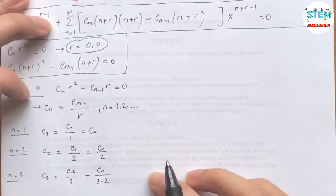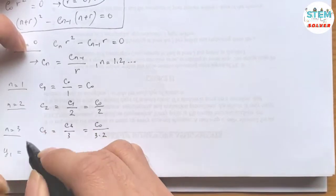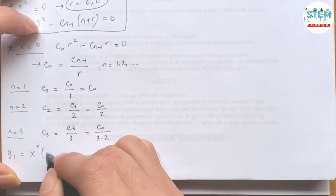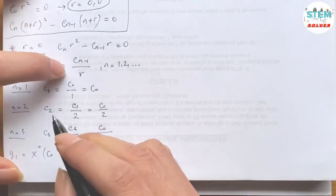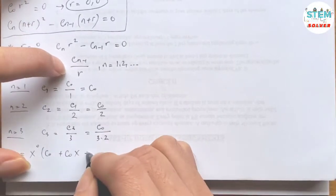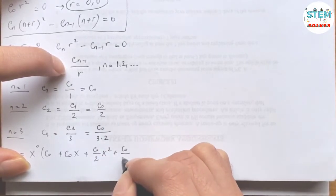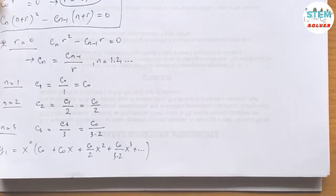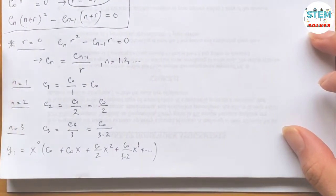Our first solution is y_1 equals x to the r (which is 0 since r=0) times the series: c_0 plus c_1·x plus c_2·x squared plus c_3·x cubed plus dot dot dot, which equals c_0 times (1 plus x plus one-half x squared plus 1 over 3·2 · x cubed plus dot dot dot).